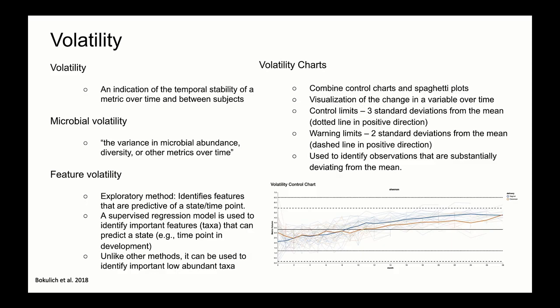One of the primary visualization tools available in this plugin is the Volatility Visualizer. This visualizer combines control charts and spaghetti plots to create an interactive volatility chart. Volatility in this context refers to the temporal stability of a metric over time and between subjects, with microbial volatility representing the variance in microbial abundance, diversity, or other metrics over time. This could provide an indication of disturbance, disease, or other events. With the Volatility Visualizer, we can track how stable a metric is over time in one or more groups.